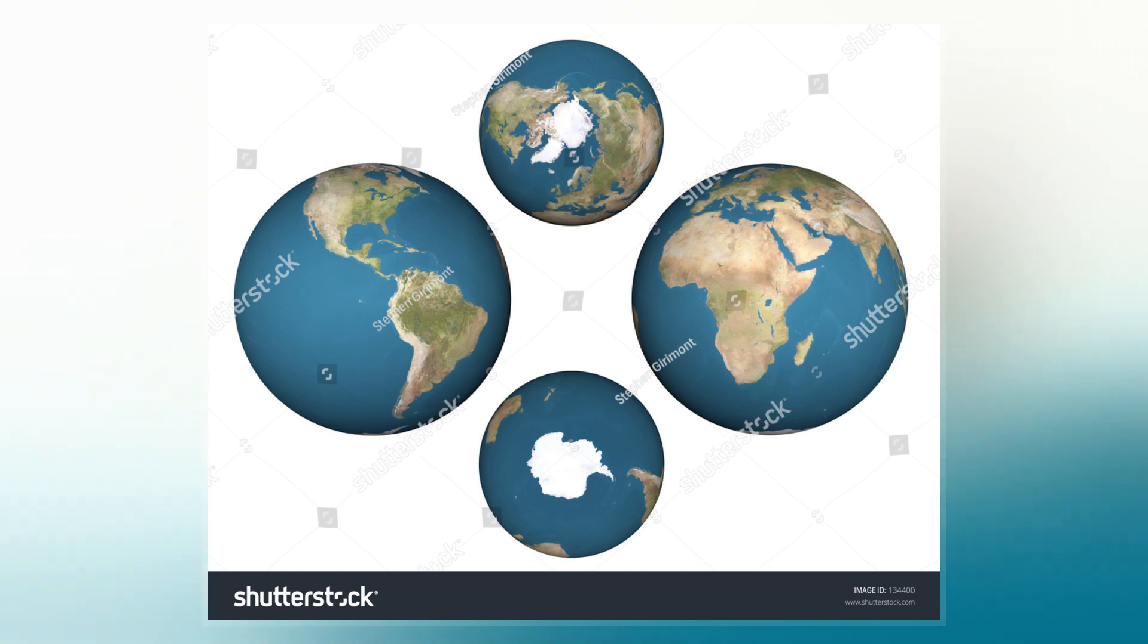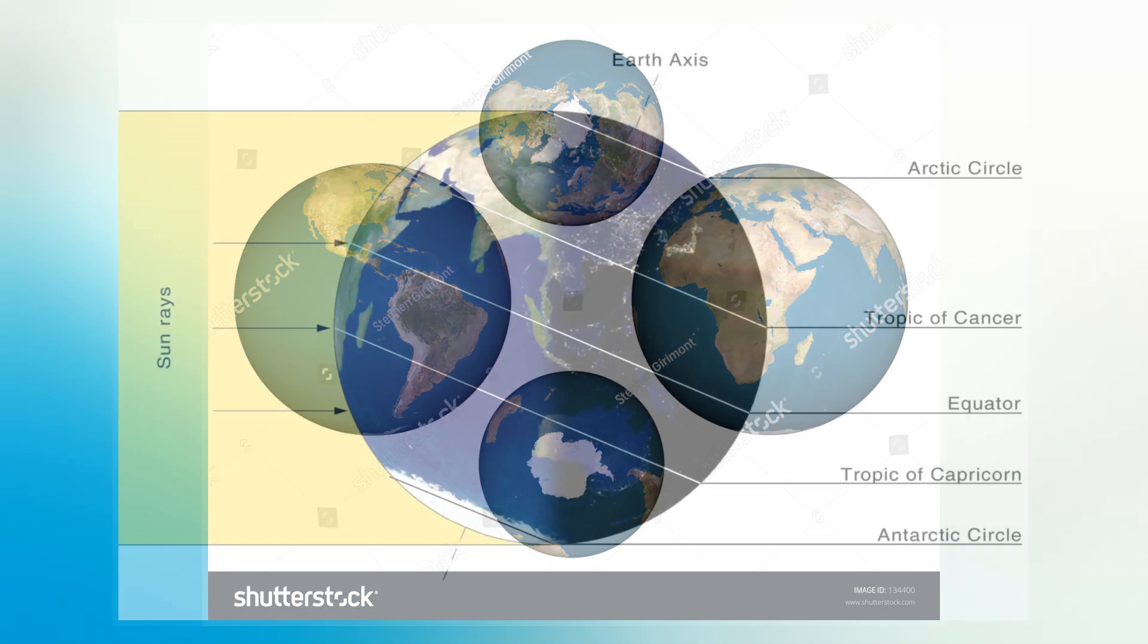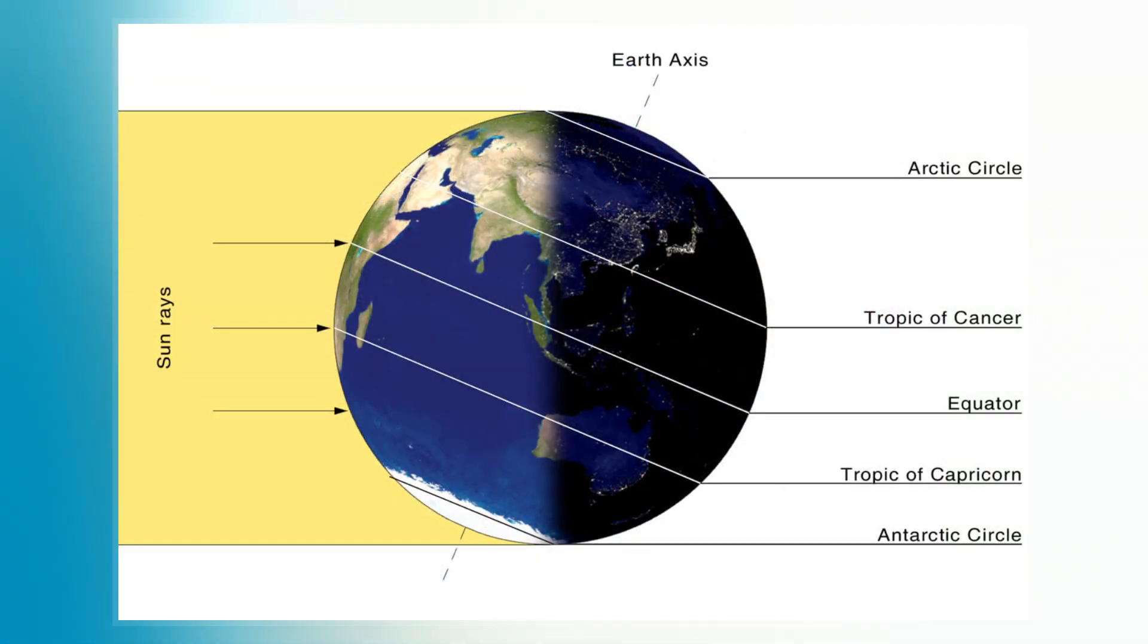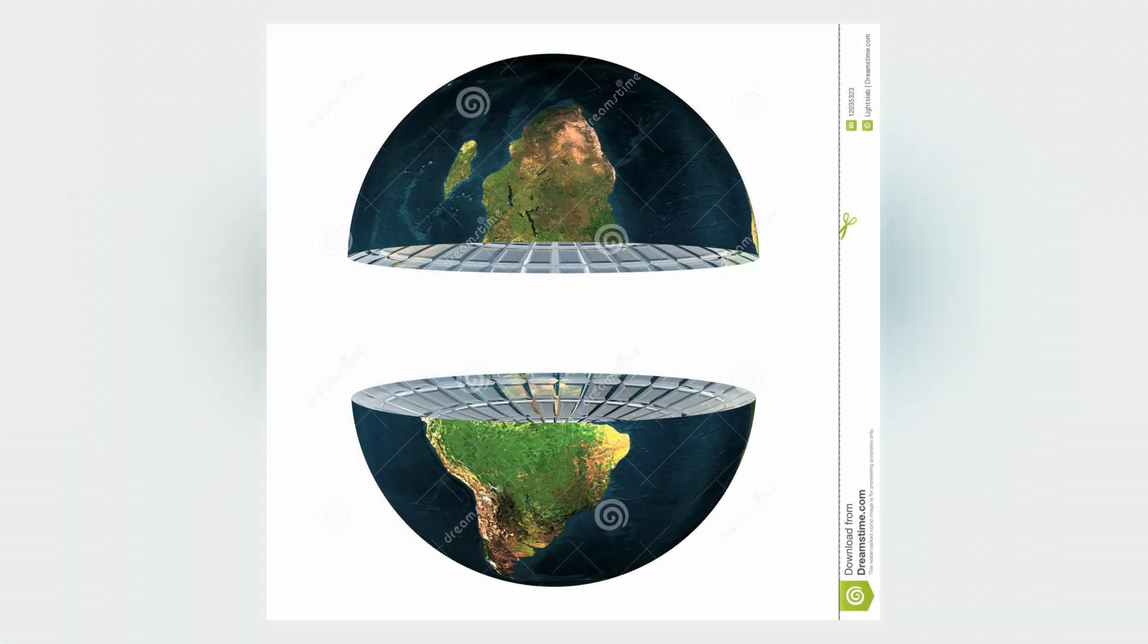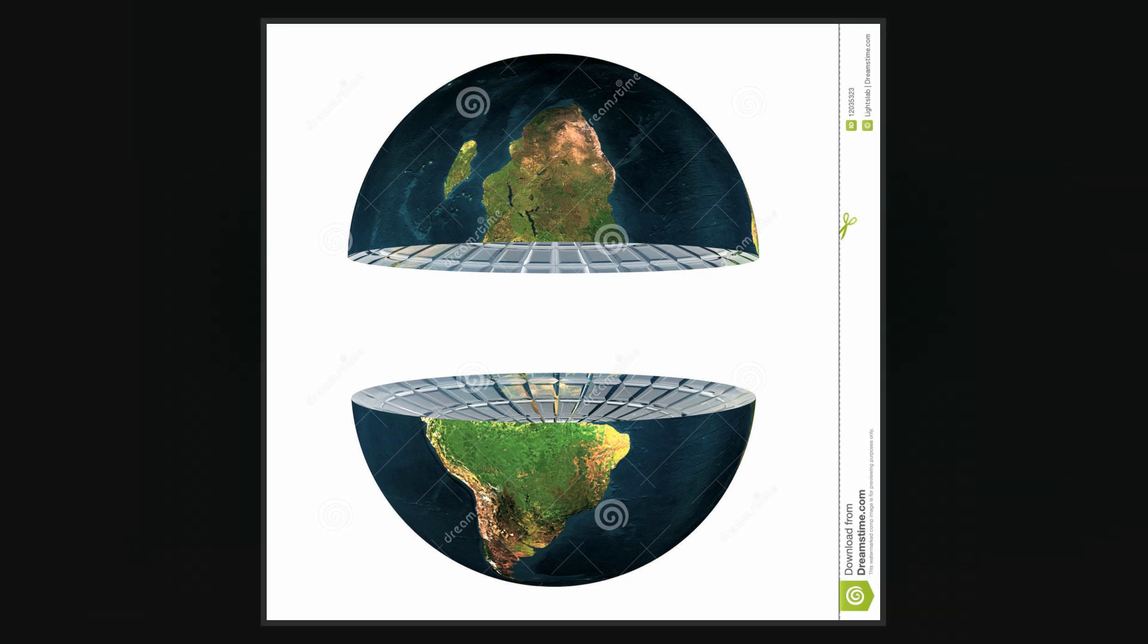However, other schemes have sought to divide the planet in a way that maximizes the preponderance of one geographic feature or another in each division. Earth may also be split into hemispheres of day and night by the terrestrial terminator.